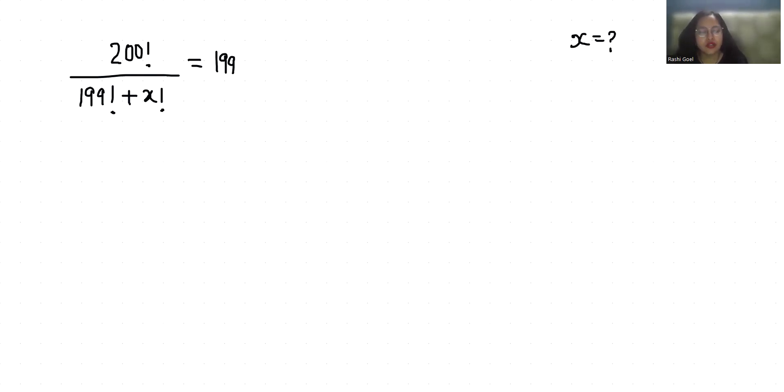So let's start with today's video solution. 200 factorial I can write as 200 times 199 factorial, because according to the factorial rule, n factorial is n times (n minus 1) times (n minus 2) and so on.